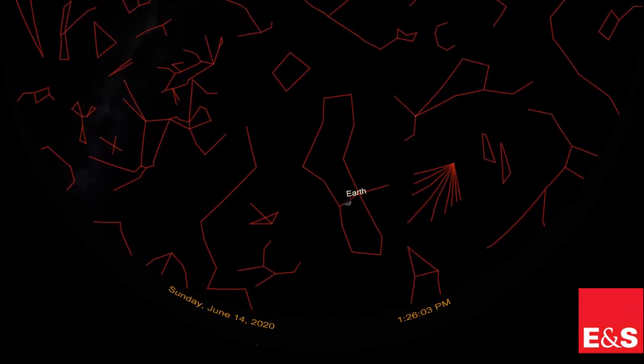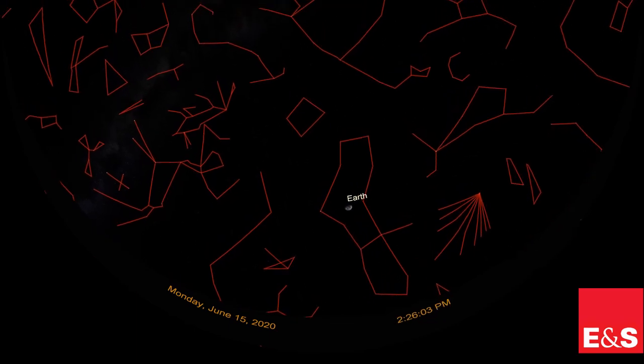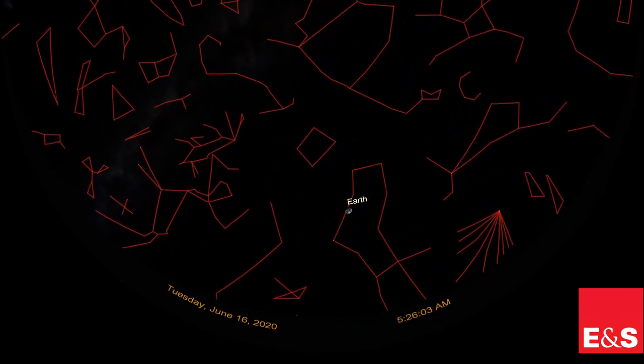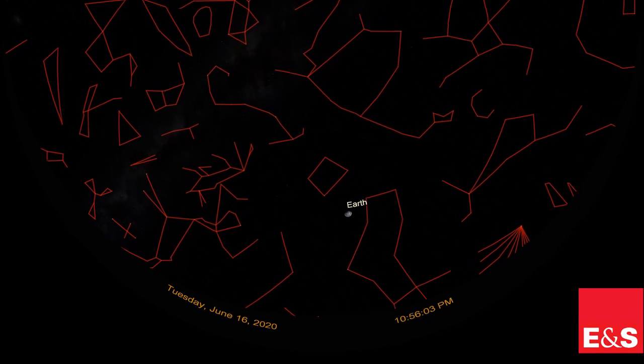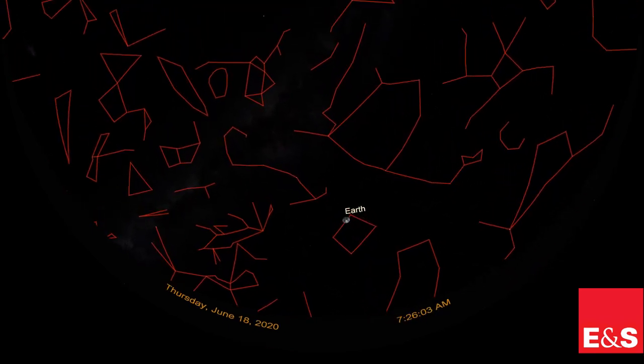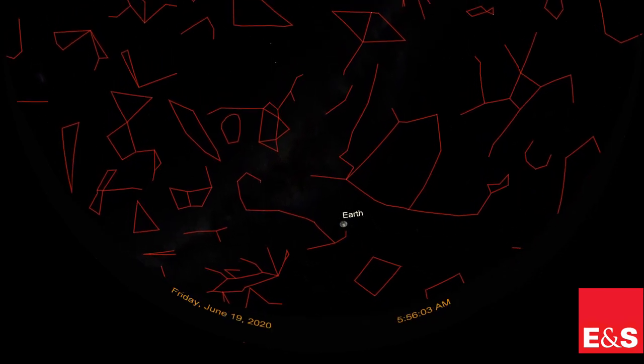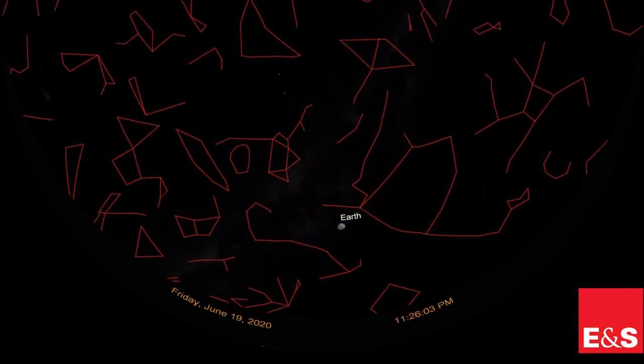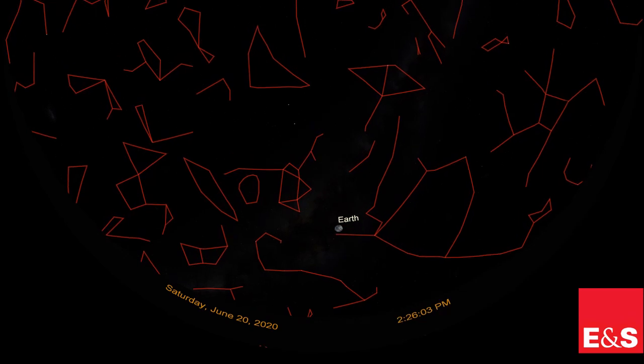But the same face of the moon, roughly, always faces the Earth, so you would see the Earth stay in the same place in your sky. So from a future moon base, the Earth will always be in the same place in the sky, but the sun and stars will rise and set in a cycle that takes two weeks.